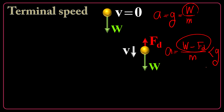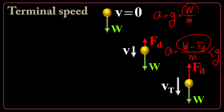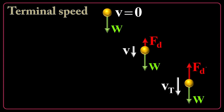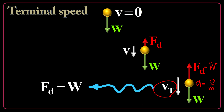What is the terminal speed? Terminal speed is the speed at which the drag force cancels W. If Fd equals W, there is no net force, so acceleration is zero. At terminal speed, there is no acceleration. Keep in mind that if the drag force cancels W during freefall, that is the terminal speed.